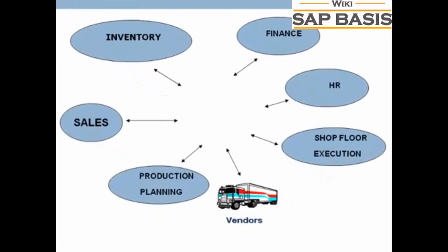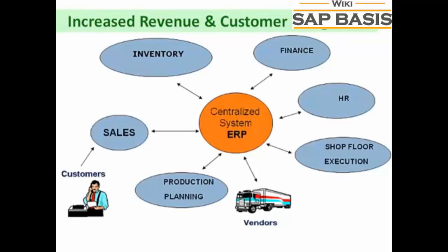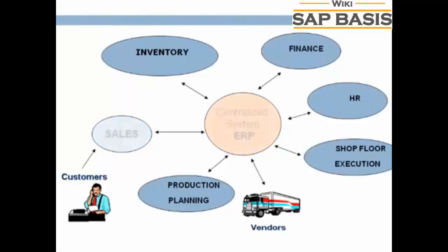In this case, all departments update a central information system. When a customer approaches the sales team to buy a product on an urgent basis, the sales team has real-time information access to the products and inventory, which is updated by the inventory department in the centralized system. The sales team responds on time, leading to increased revenue and customer delight. If manufacturing is required, the sales team updates the centralized database, and the production planning department is auto-updated for requirements. The production planning team checks raw material availability via the central database, which is updated by the inventory department.